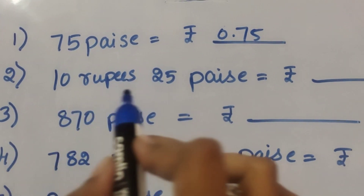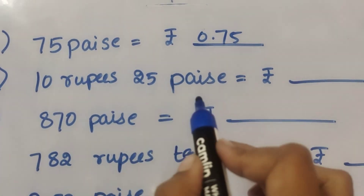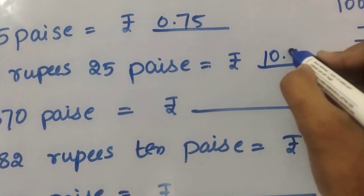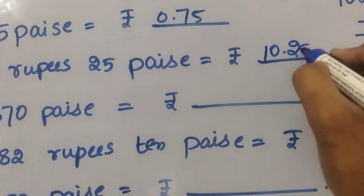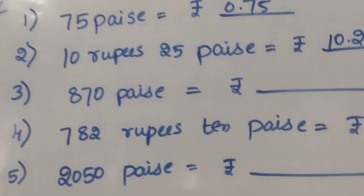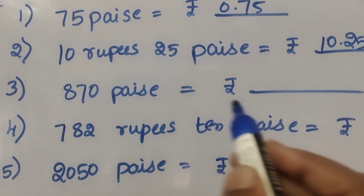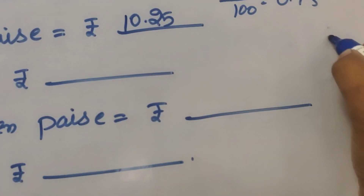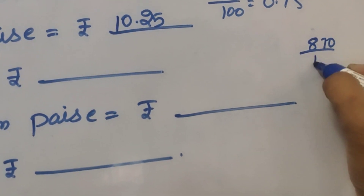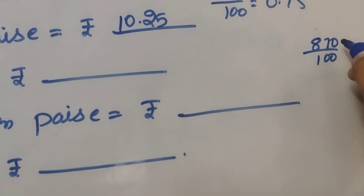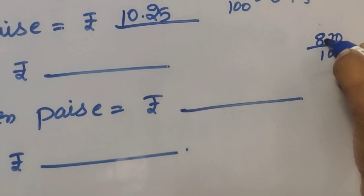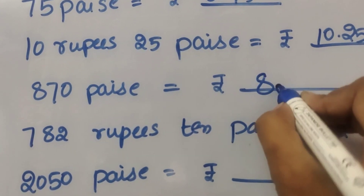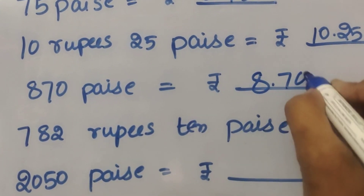Next: ten rupees twenty-five paise = 10.25 rupees. Next: eight hundred seventy paise = 870 divided by 100 = 8.70 rupees.